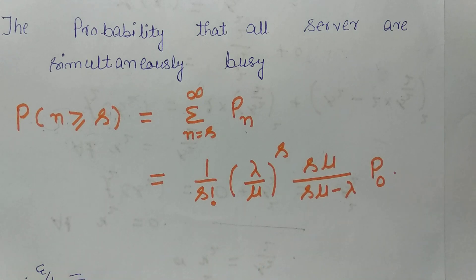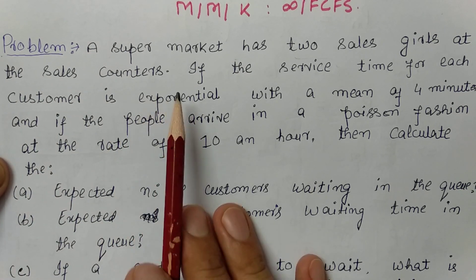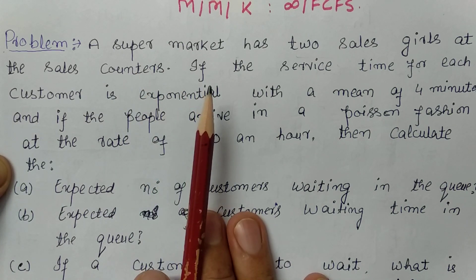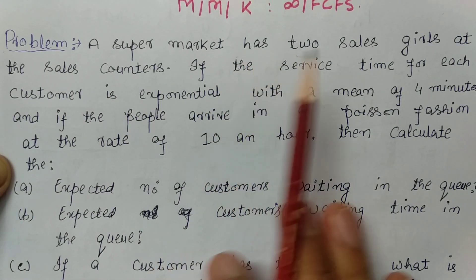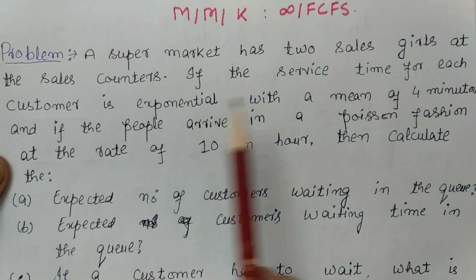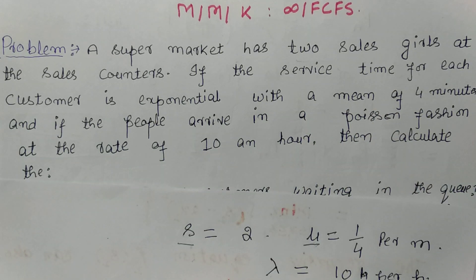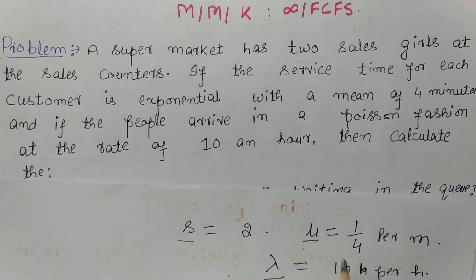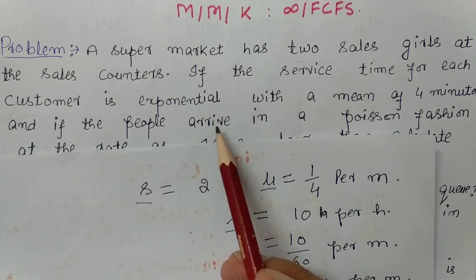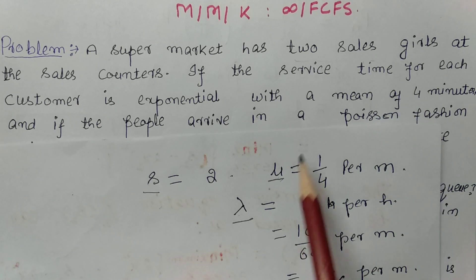Now let us discuss the problem in detail. A supermarket has two salesgirls at a sales counter, so there are two servers, meaning s equals 2. The service time for each customer is exponential with a mean of four minutes, so the service rate μ equals 1/4 per minute.